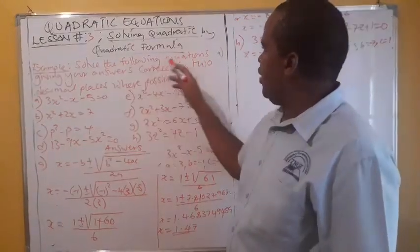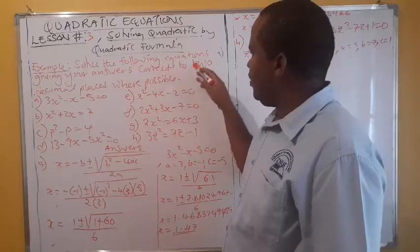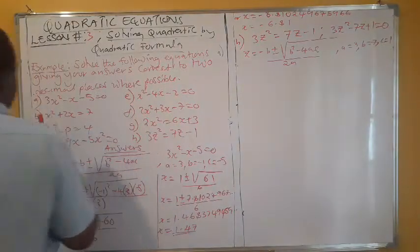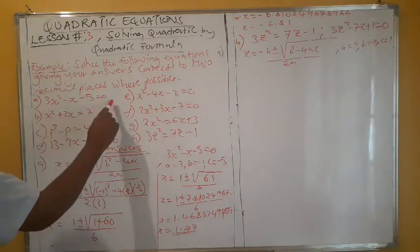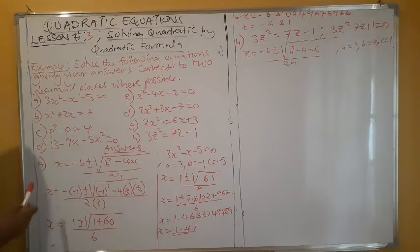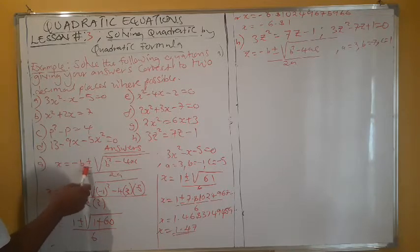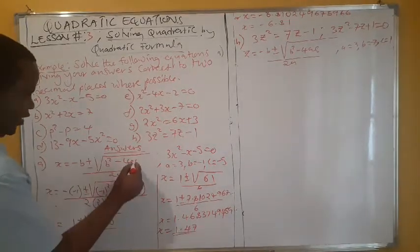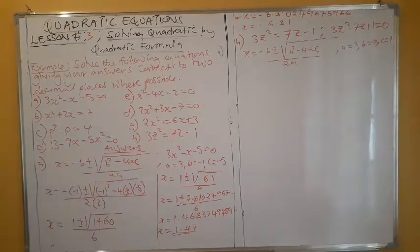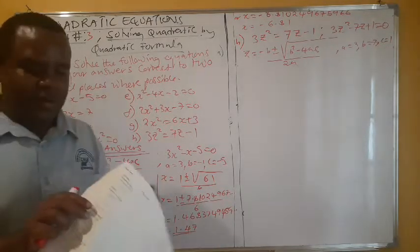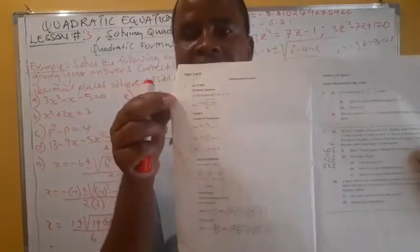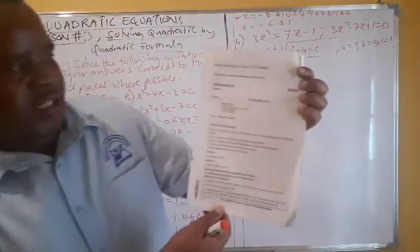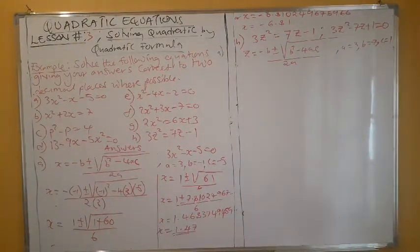The question says: solve the following equations giving your answers correct to two decimal places where possible. The first one is 3x² − x − 5 = 0. To solve this quadratic equation we use the quadratic formula. The formula is x = (−b ± √(b² − 4ac)) / 2a. Take note — in an exam the formula is always given. This is Paper 2, so you don't need to memorise it.